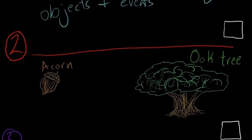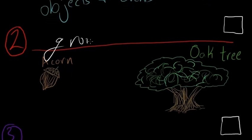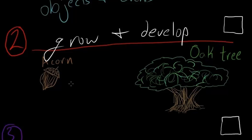Next we saw that all living things grow and develop. We watched a young acorn grow into a fully developed adult oak tree. All living things grow and develop.